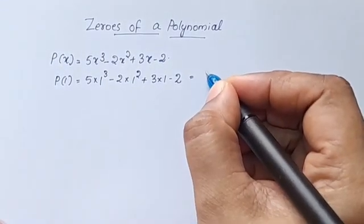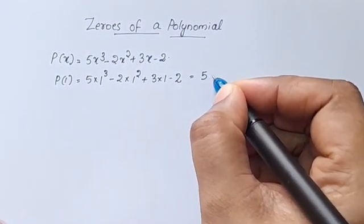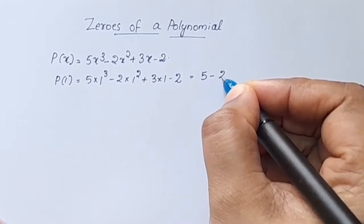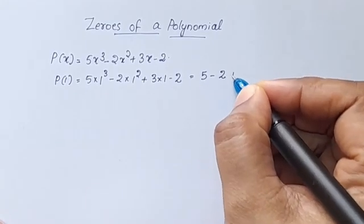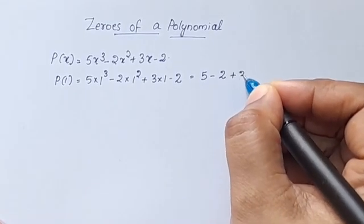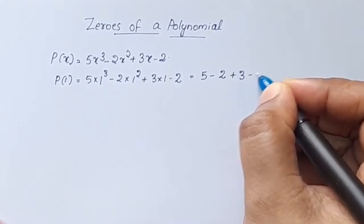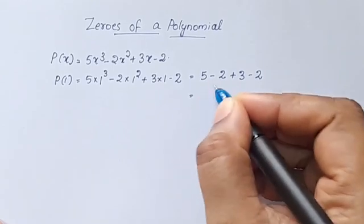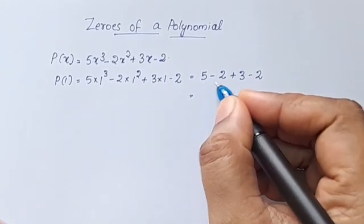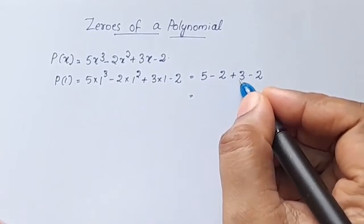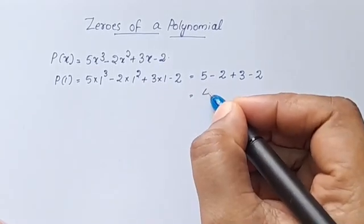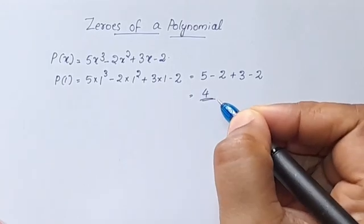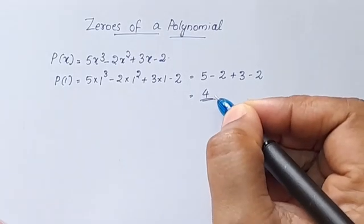5 into 1 cubed is 5. 2 into 1 squared is 2, plus 3 into 1 is 3, minus 2. That gives us 5 minus 2, which is 3, plus 3 is 6, minus 2 is 4. So P of 1 is equal to 4.